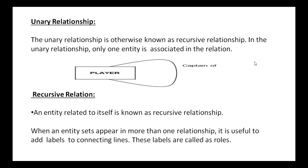Coming to unary relationship — unary relationship is also known as recursive relationship. Unary means one, so in a unary relationship, only one entity is associated in that relationship. That means the entity is associated to itself, which is why this is called a recursive relationship.